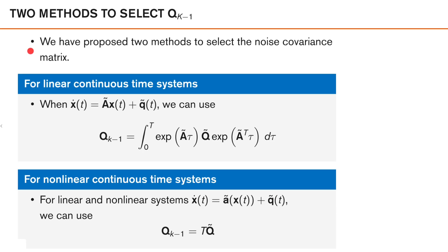To summarize what we learned so far, we have proposed two methods for selecting noise covariance. The first method is designed for linear continuous time systems, and here we select the discrete time covariance by solving the integral. In the second method, referred to as the modified Euler method, we obtain Q_{k-1} by simply multiplying the continuous time covariance Q̃ with capital T.